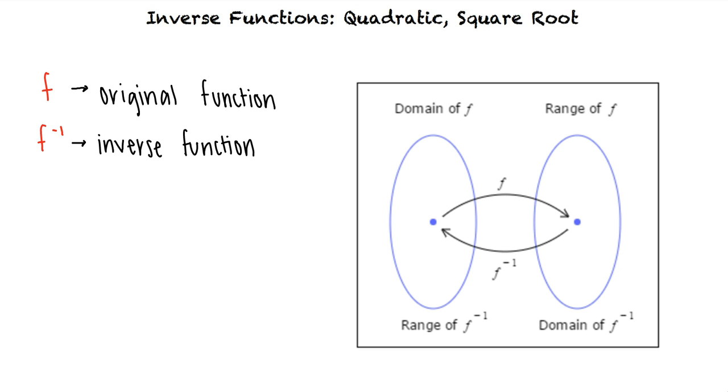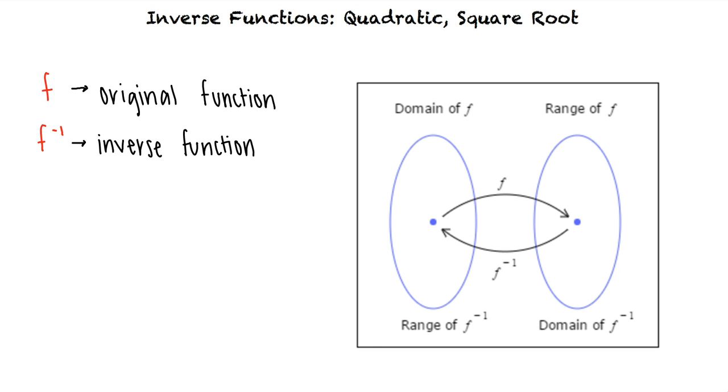So how can we apply this to quadratic and square root functions? Let's say we're given the function f(x) equals the square root of 1 minus x plus 1 for the domain negative infinity to 1. We can take a look at its graph for reference.